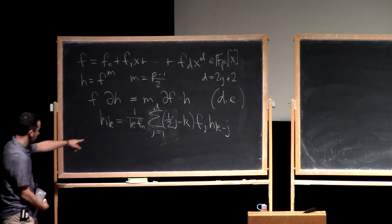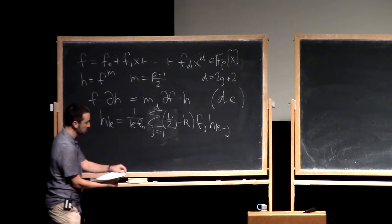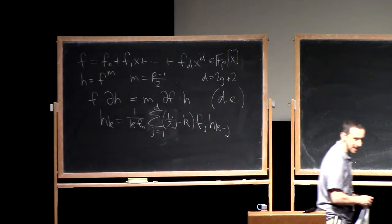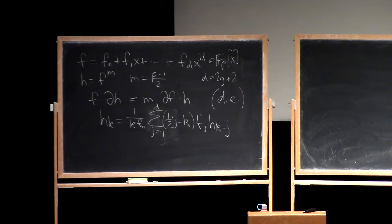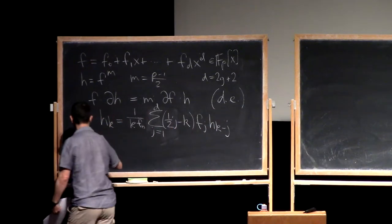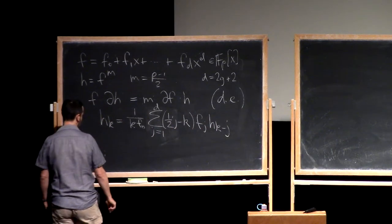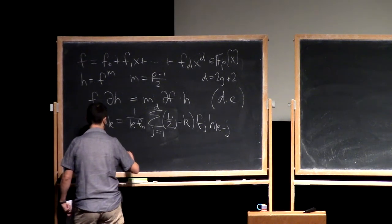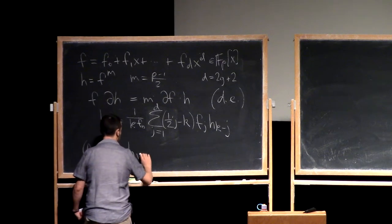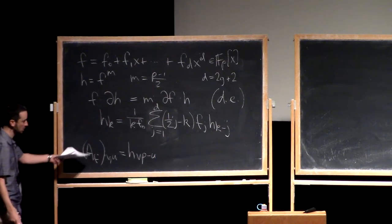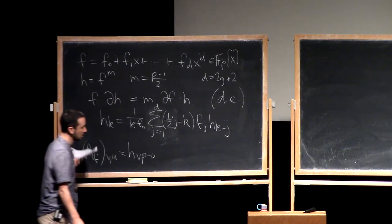This expresses each h_k as a linear combination of the previous d values, provided that k is not 0 modulo p. I want to take a quick look at what happens when we try to use this recurrence to compute the matrix A_f. Its entries are given by h_{bp minus u} — this is a g by g matrix, the Hasse-Witt matrix.